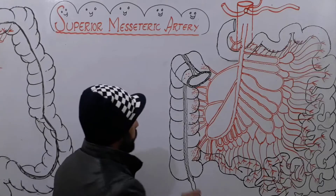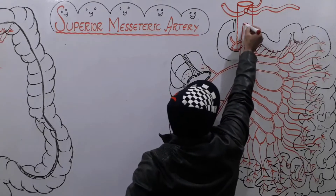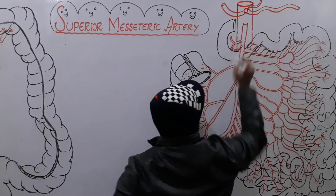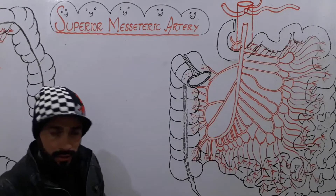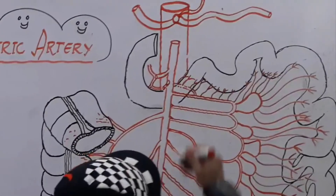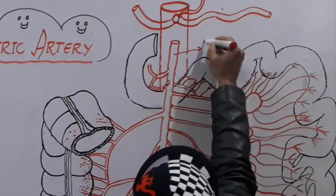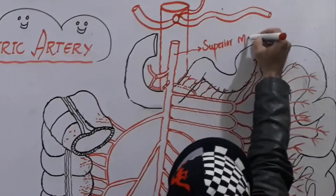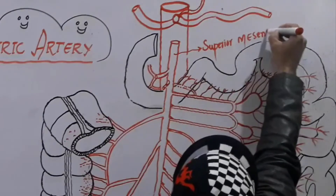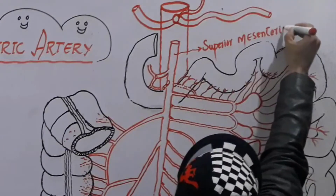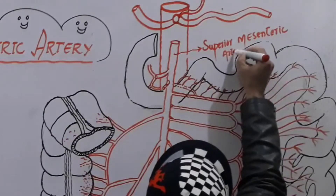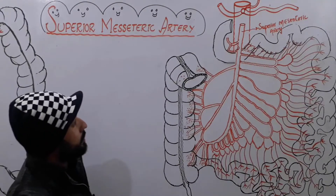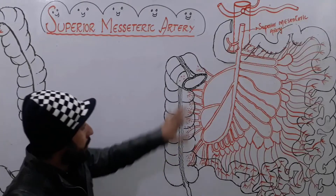In this lecture I'm going to discuss the second big branch which arises from the abdominal aorta, and this branch is our superior mesenteric artery — SMA. So in this lecture we are going to discuss the superior mesenteric artery and all its branches.